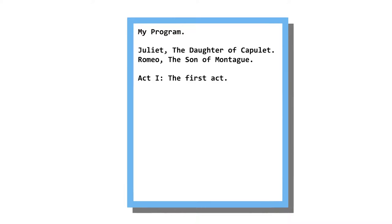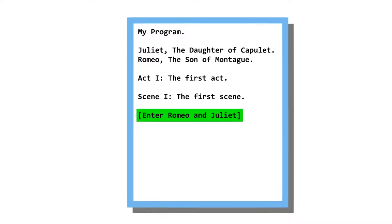After the characters are all declared, we move on to the first act. Like actual Shakespeare plays, programs in Shakespeare are divided up into acts and scenes, and they are numbered with Roman numerals. To have characters enter and exit the stage, you use stage directions. You can have multiple people enter at the same time by listing both their names and putting 'and' between them.